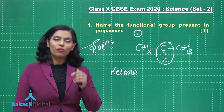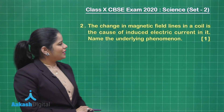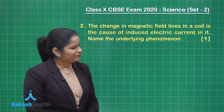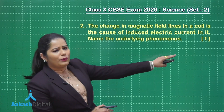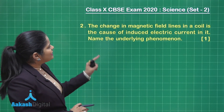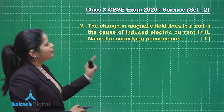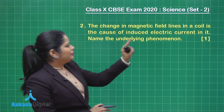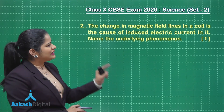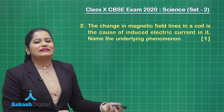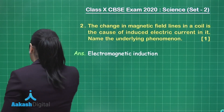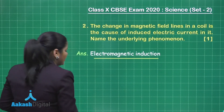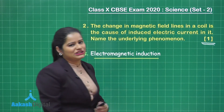Now let's move on to the next question. Question number two is the first question of the physics part and is a one-mark question. It asks: if the change in magnetic field lines in a coil is the cause of induced electric current in it, name the underlying phenomenon. We know this happens due to electromagnetic induction. So the underlying phenomenon is electromagnetic induction. If you have written the same answer, you are surely going to fetch one mark for this question.